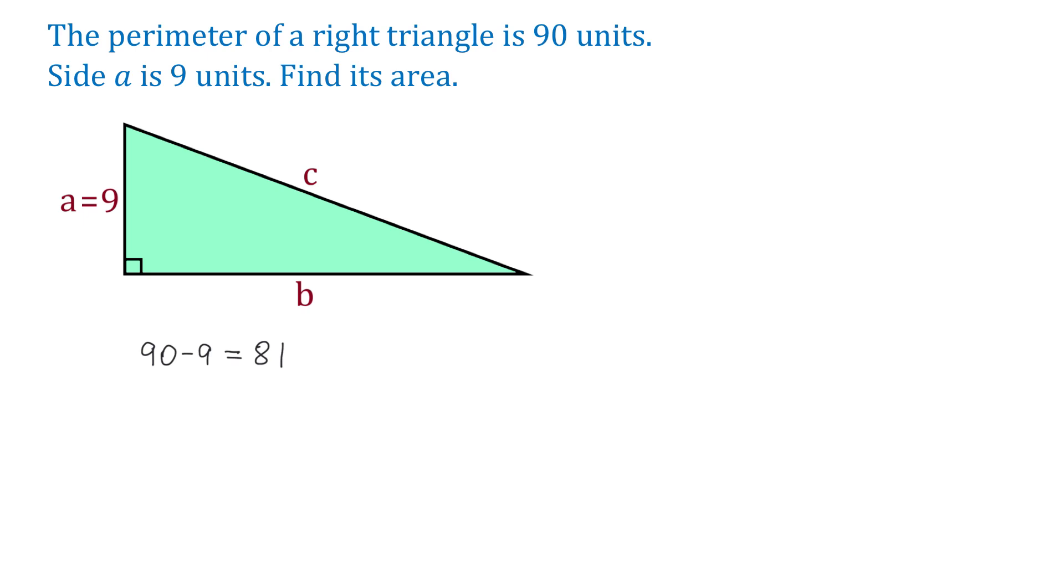Now here we need to recognize the set of the Pythagorean triples 9, 40, and 41. So if A is 9 units, then B will be 40 and the hypotenuse will be 41. And now to find the area,